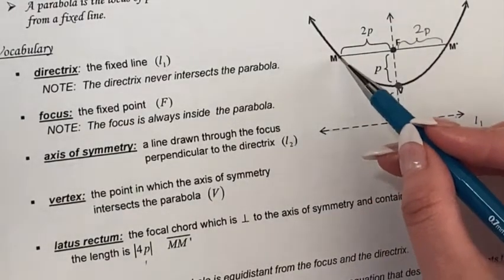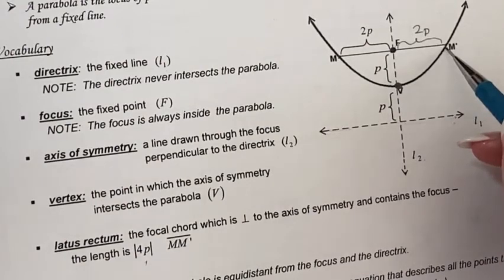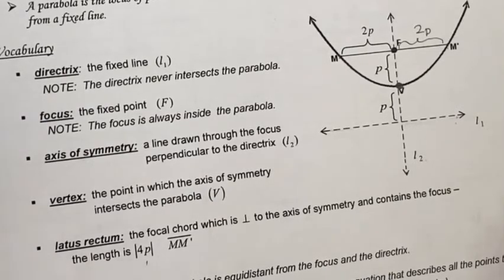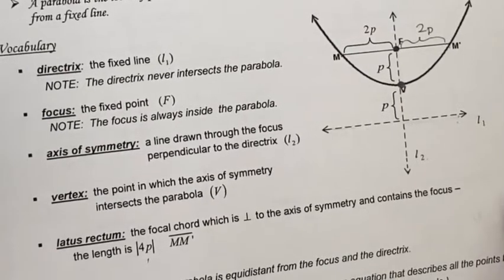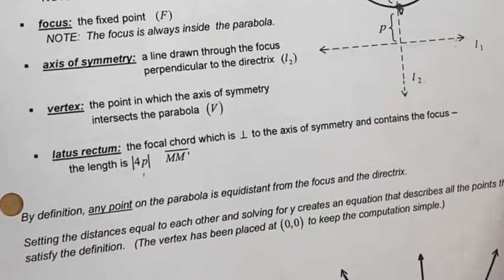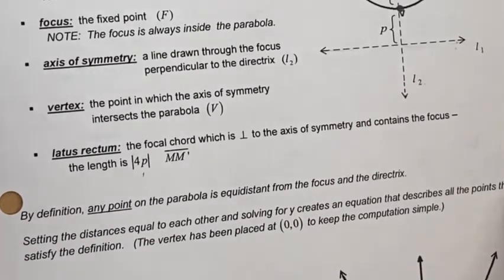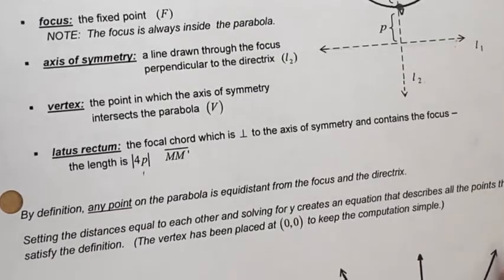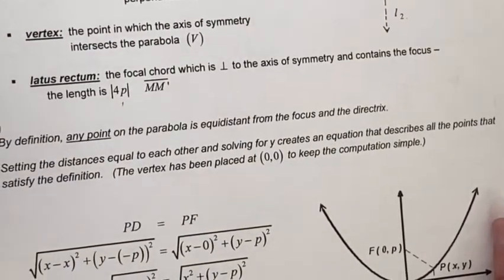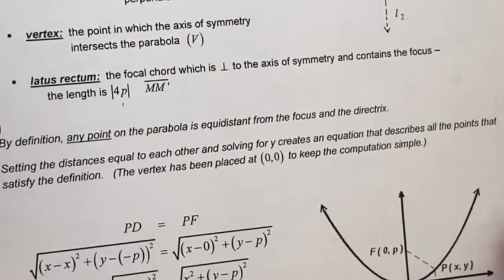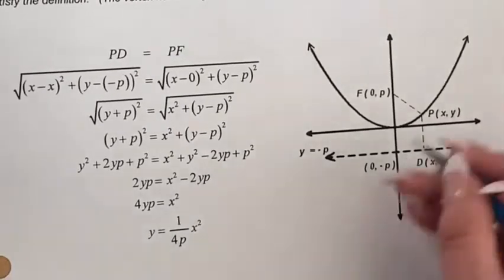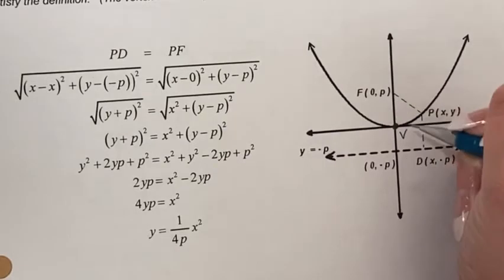By definition, any point on the parabola is equidistant from the focus and the directrix. Setting those distances equal and solving for y creates an equation describing all points satisfying the definition when the vertex is placed at the origin (0, 0).